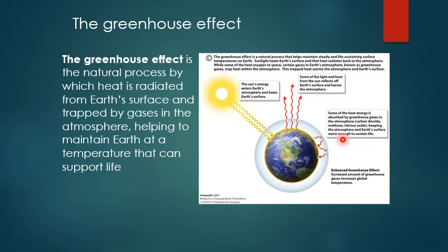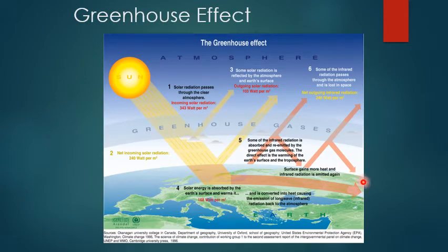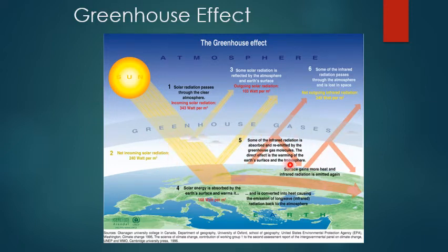Greenhouse gases like CO2 and methane are key to sustaining life on earth. Some heat is re-radiated or reflected back as light and heat and leaves the atmosphere, but quite a bit is still trapped by those gases. The enhanced greenhouse effect is the increased amount of greenhouse gases, and that's what is leading to an increased global temperature. So a natural process is good to some extent, but the enhanced greenhouse effect — the increase of these greenhouse gases — is not good.